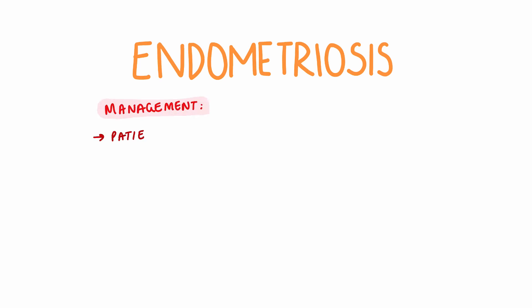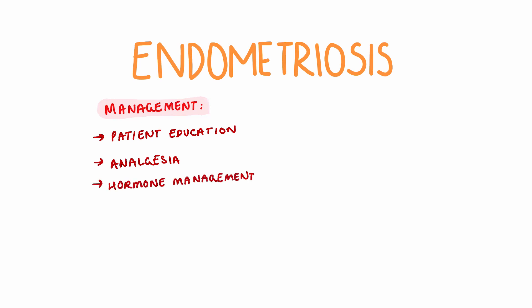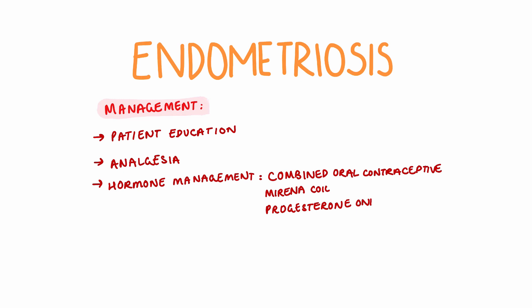Initial management includes correctly diagnosing the patient and providing a clear explanation of the pathology. Analgesia is given to tackle the pain, and hormone management is used to reduce ovulation and reduce endometrial thickening. Options for this include the combined oral contraceptive pill, the progesterone-only pill, and the Mirena coil. Surgical management consists of laparoscopic surgery, as mentioned previously.